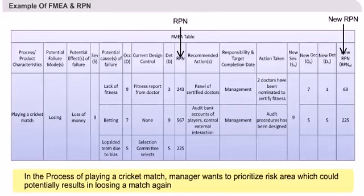Since the team management had worked on the causes and not on severity, its rating still remains at 9. The new RPN is now much lower and the risk of the two causes has been mitigated.